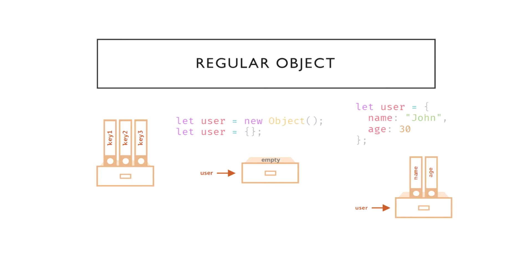We can immediately put some properties into the figure brackets as key-value pairs. For example, name: John, age: 30. A property has a key, also known as a name or identifier, before the colon, and a value to the right of it. In the user object there are two properties: the first has the name 'name' and value 'John', the second has the name 'age' and value 30. The resulting user object can be imagined as a cabinet with two signed files labeled name and age.